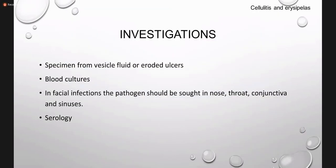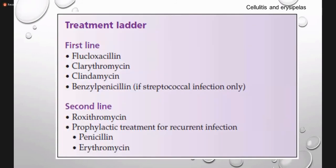For investigation in cellulitis and erysipelas, the specimen is taken from vesicle fluid or ulcers. Blood cultures can be sent in cases of systemic symptoms, and serology can be done to see antibodies. Treatment for both erysipelas and cellulitis always involves oral antibiotics.